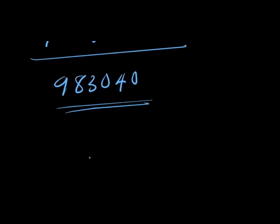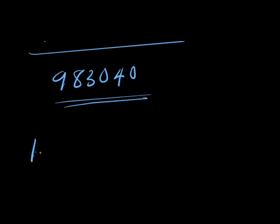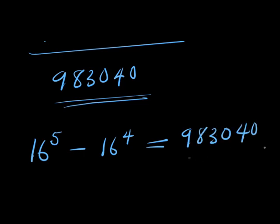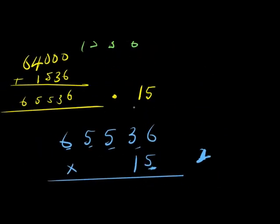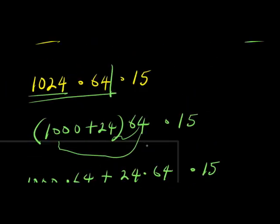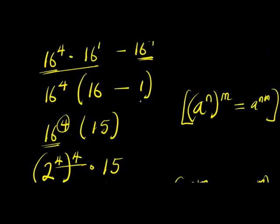So this is what we get for 16 to the power of 5 minus 16 to the power of 4. This is 983,040. And we have achieved this without a calculator. So guys, this is it and if you enjoyed this, don't forget to subscribe and share. Thank you and goodbye.